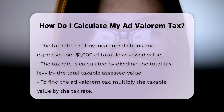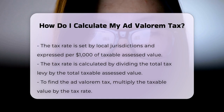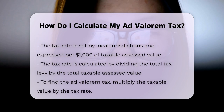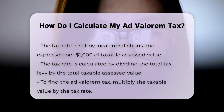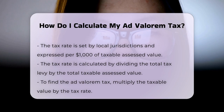Step five: Calculating the ad valorem tax. To calculate the ad valorem tax, you multiply the taxable value of the property by the tax rate. For example, if the taxable value is $23,540 and the tax rate is 20.309% (or $20.309 per $1,000), the annual tax would be $4,798.63.